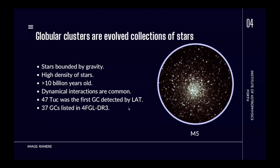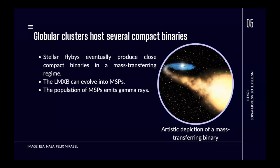Globular clusters host several compact binary systems formed mainly via stellar flybys. These stellar flybys can eventually produce mass-transferring binary systems, some of which are low-mass X-ray binaries (LMXBs). These compact binaries can evolve to millisecond pulsars, and the millisecond pulsars emit the gamma rays we observe from globular clusters. So the gamma-ray emission from globular clusters is actually coming from the population of millisecond pulsars they contain.